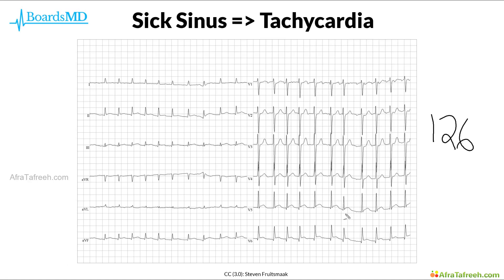We can see an irregularly irregular rhythm, and it is very difficult to pick out any P waves preceding these QRS complexes. Therefore, this EKG is consistent with atrial fibrillation with a high heart rate, and this is consistent with the tachyarrhythmias we would expect to see in sick sinus syndrome — from the same patient who had that bradycardic rhythm on the previous slide. This is highly characteristic of sick sinus syndrome.